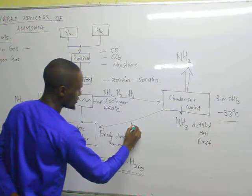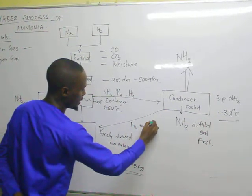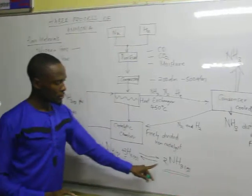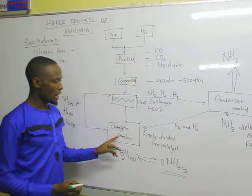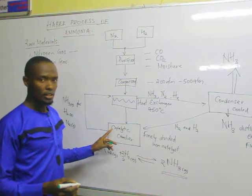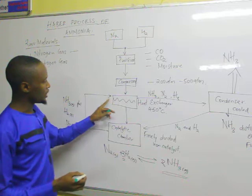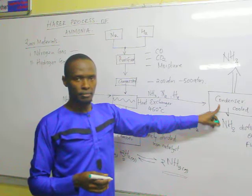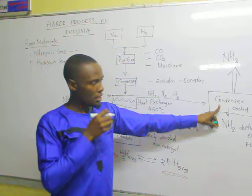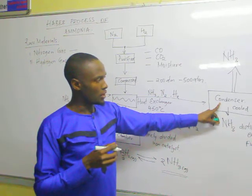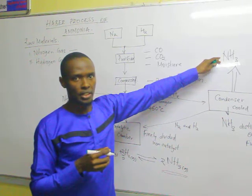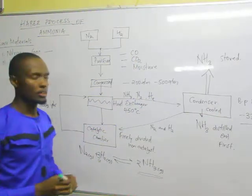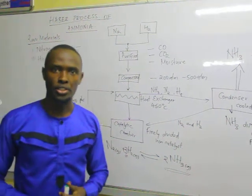The remaining hydrogen and nitrogen are taken back to the catalytic chamber, where they will react again to form ammonia. Any further unreacted nitrogen and hydrogen go back to the heat exchanger, where they are preheated and then taken to the condenser. Ammonia is collected as a liquid and stored in containers, and the process repeats itself. Thank you very much for watching.